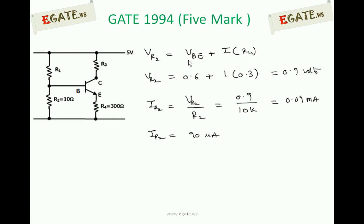So VR2 equals VBE plus I into R2. I is nothing but emitter current. Emitter current is approximately equal to collector current. Because beta is very large, here you are going to get as 1.01. That 0.01 can be neglected.